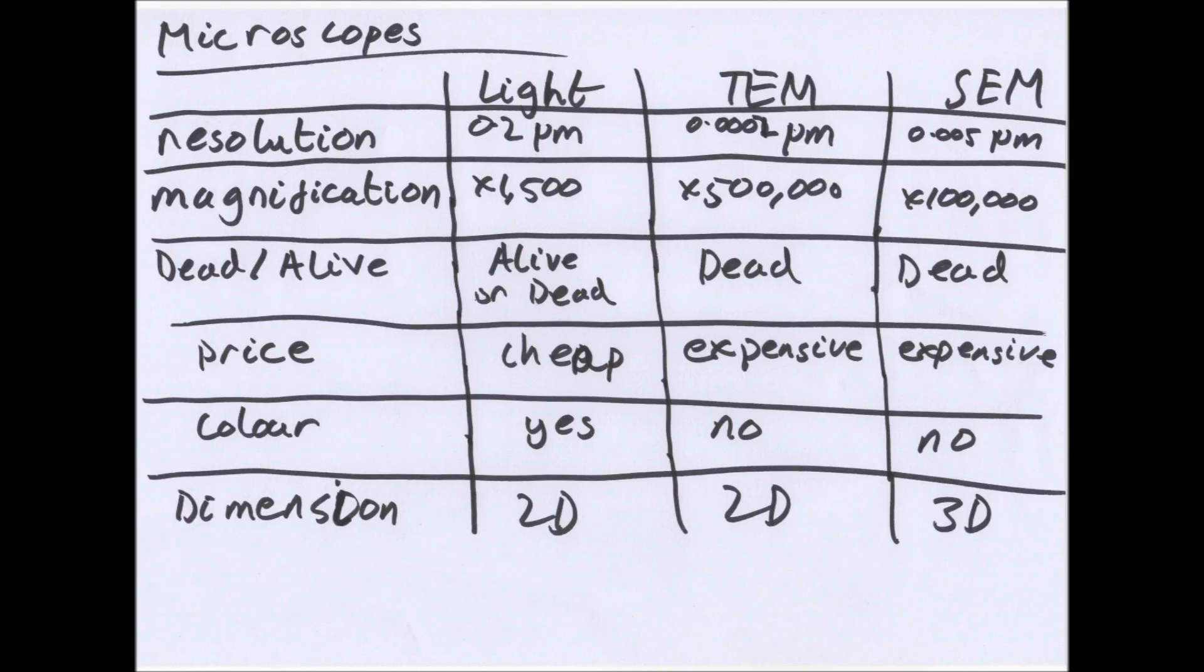Right, and there are three types of microscopes: light, transmission electron microscopes or TEMs, and scanning electron microscopes SEM. And here is a table of what you need to know about them. So as you see, light microscopes have the lowest, well highest resolution such that it's a larger number, so they can only see objects that are 0.2 micrometers apart without being seen as one object, that's maximum. And then transmission electron microscopes are the best with 0.0002 micrometers, that's also 0.2 nanometers.